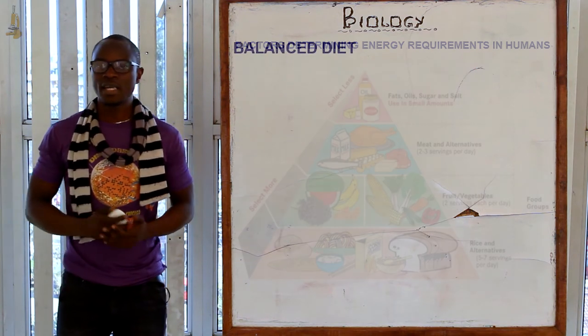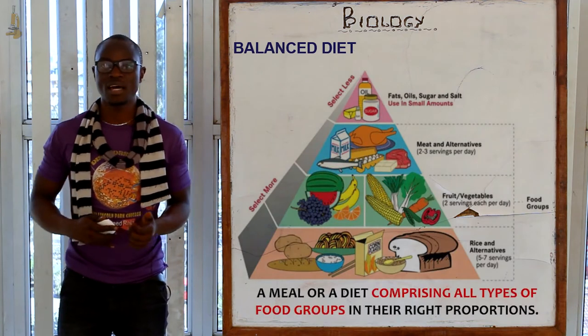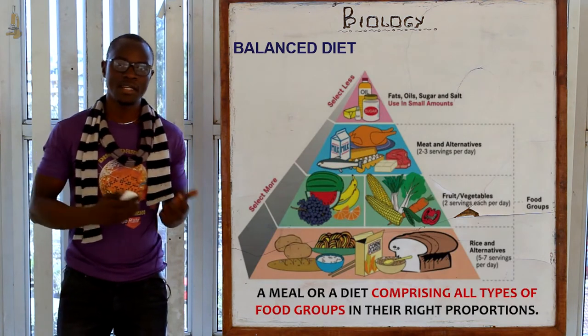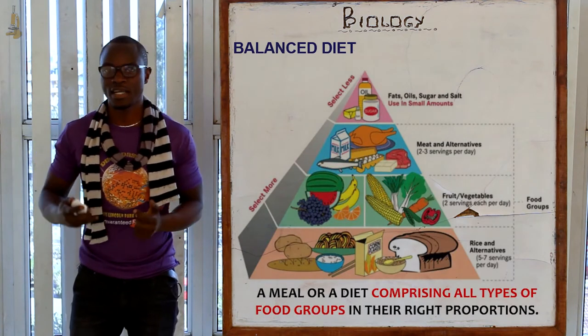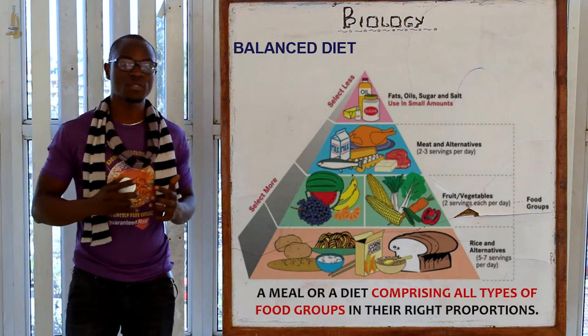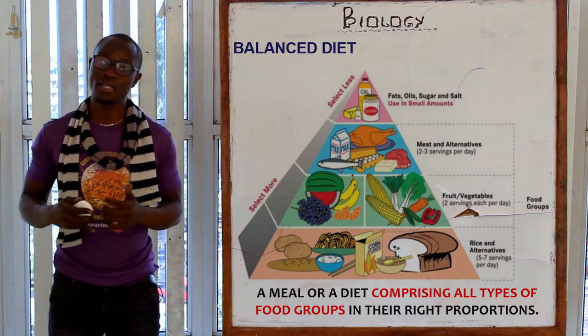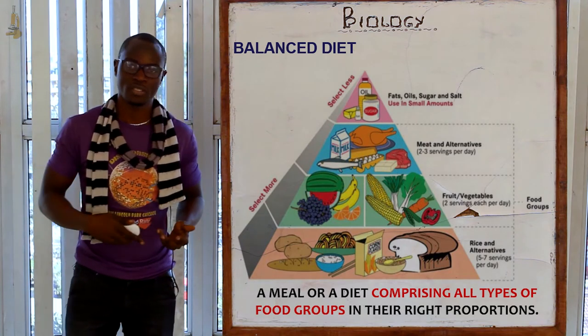Now let's look at balanced diet. What is a balanced diet? A balanced diet is a dish or diet that consists of all types of nutrients or food in the right proportions.